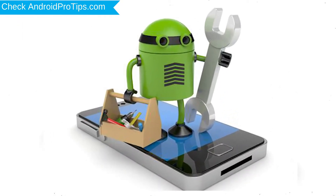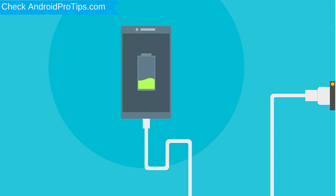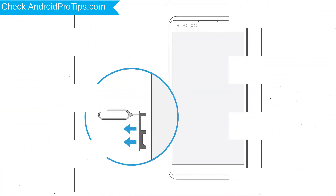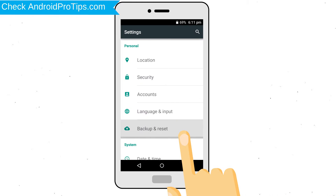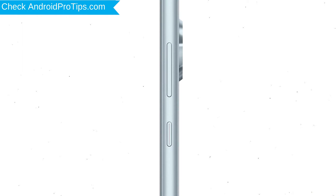Before resetting your mobile, your mobile battery must be above 50%. Remove SD cards and SIMs. Back up your Android mobile data if possible. Power off your mobile by holding the power button.